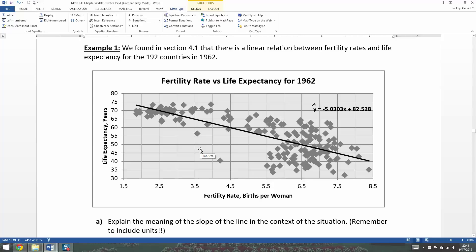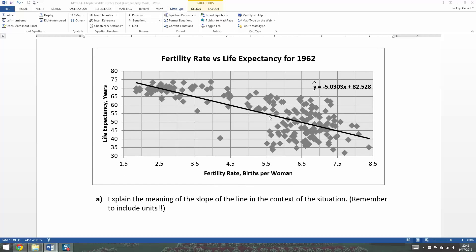We found in section 4.1 that there is a linear relation between fertility rates and life expectancy for the 192 countries in 1962. And here they are. You have your life expectancy right here and the fertility rates right here. This is all thanks to gapminder.com, a very useful site, which you will use for your first project. And you can see that I have here the equation of the regression line given to you. Now, we don't know how to find it yet, but in this case, it was just given to us.